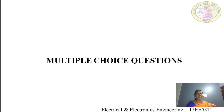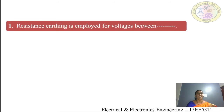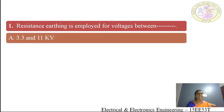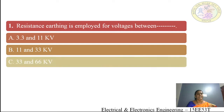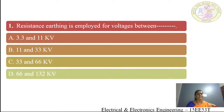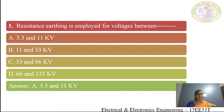Let us see some multiple choice questions on neutral grounding. First question: resistance earthing is employed for voltages between — (A) 3.3 kV and 11 kV, (B) 11 kV and 33 kV, (C) 33 kV and 66 kV, (D) 66 kV and 132 kV. The answer is option A: 3.3 kV and 11 kV.